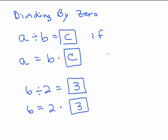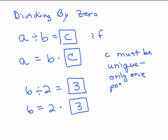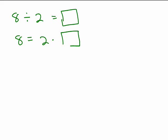But there's a little caveat, we have to say C must be unique. That means only one possible answer. So we're going to come back to this in a minute. So let's do 8 divided by 2. Just one more problem. It's whatever makes this equation true, which would be 4, so that's why 8 divided by 2 is 4.